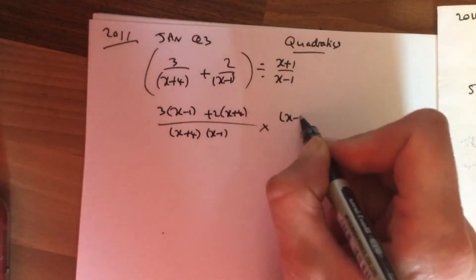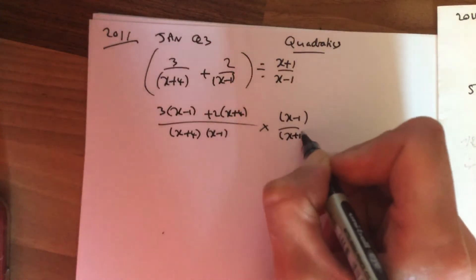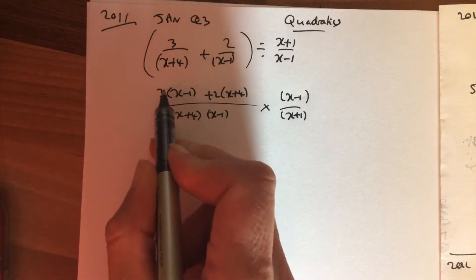To divide, you turn the one after the division sign upside down. So times like this, top and tidy up.